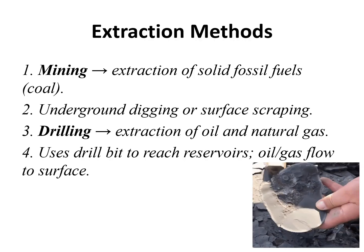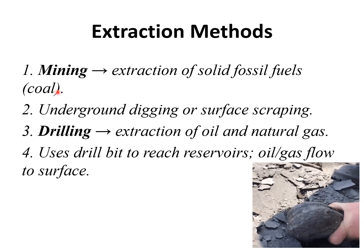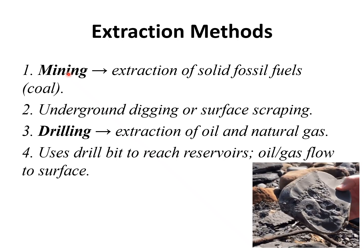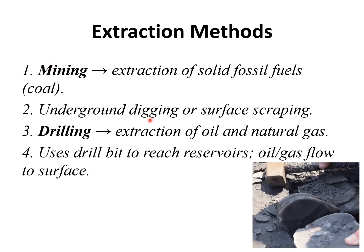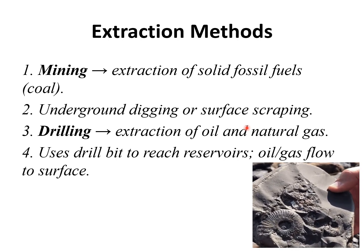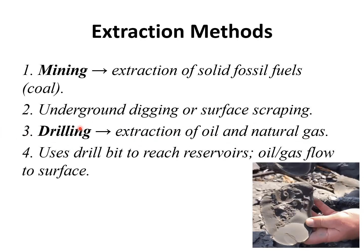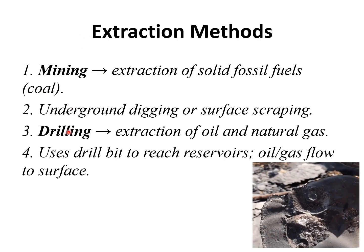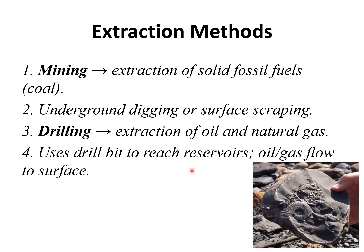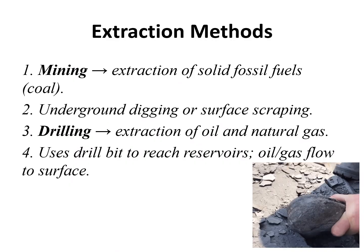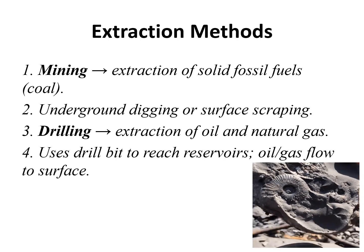Let's continue to extraction. We want to know which methods are used to extract these fossil fuels. Number one is through mining — extraction of solid fossil fuels like coal is done through mining, using underground digging or surface scraping. Another method is drilling — extraction of oil and natural gas involves drilling, using a drill bit to reach reservoirs, and then oil and gas flow to the surface. This is especially relevant in Hoima, where we discovered petroleum in Uganda.